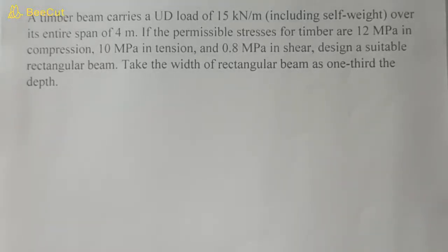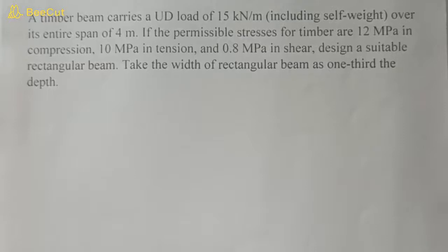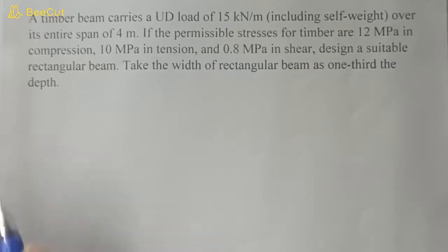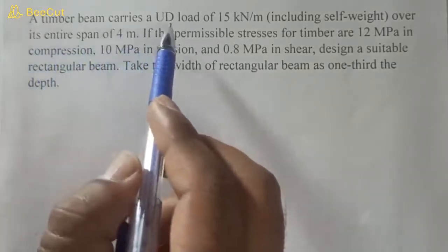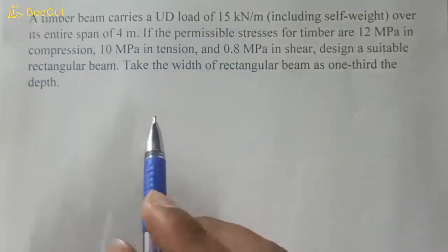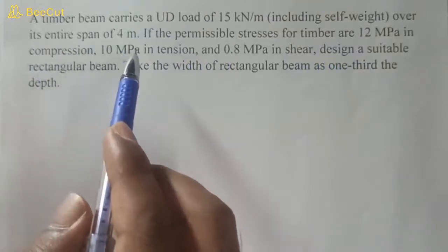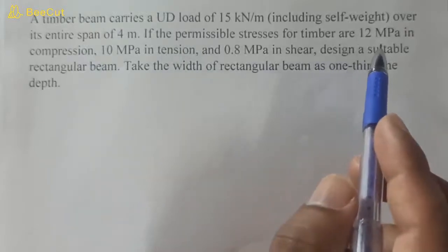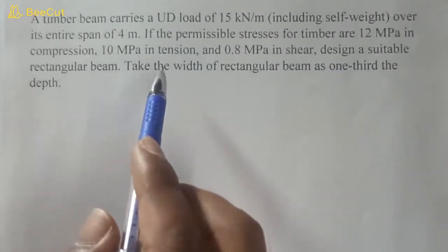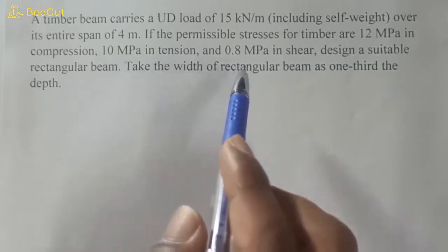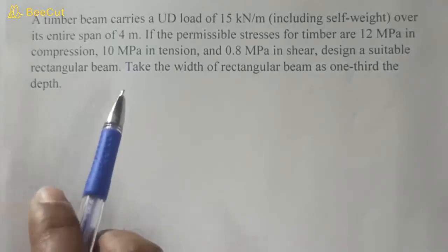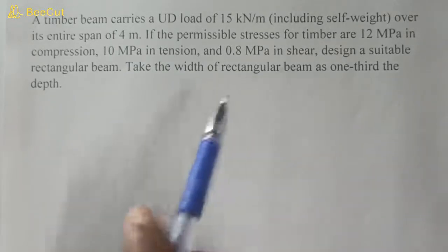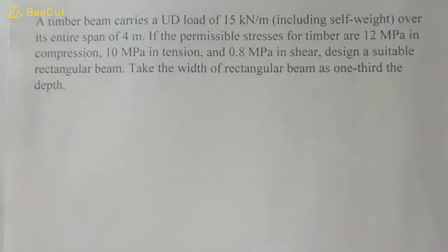Hello friends, welcome to my YouTube channel. In today's video we will solve a numerical problem based on bending and shear stresses in beams. A timber beam carries a UDL of 15 kilonewton per meter including self weight over its entire span of 4 meters. The permissible stresses for timber are 12 megapascal in compression and 10 megapascal in tension, and 0.8 megapascal in shear. Design a suitable rectangular beam with width equal to one third of the depth. It is not stated whether simply supported or cantilever, so let's assume it is simply supported.